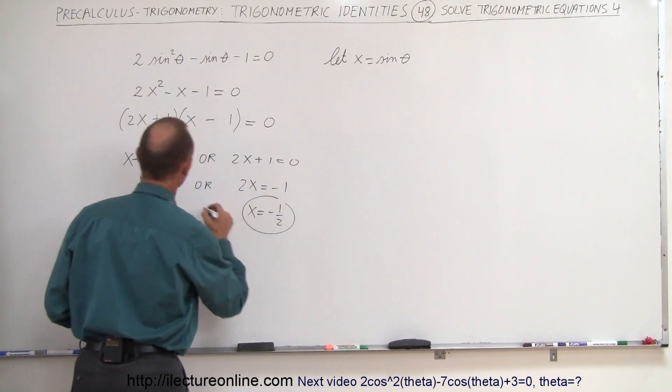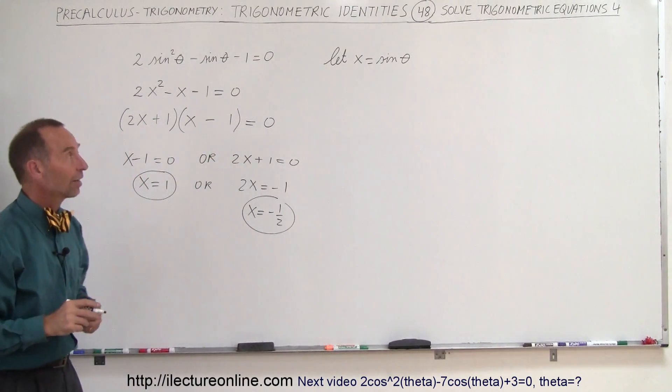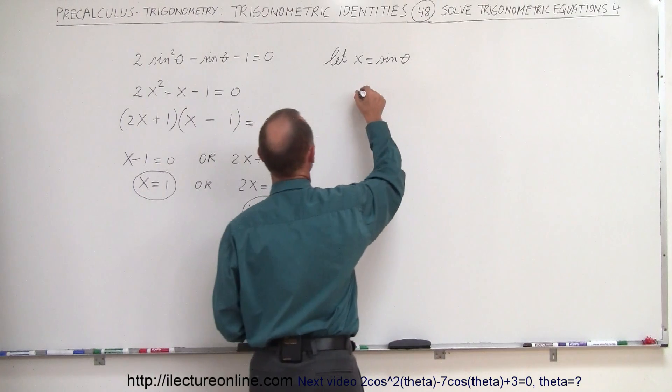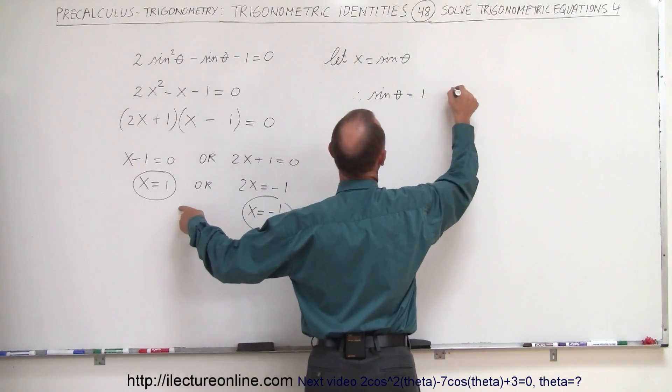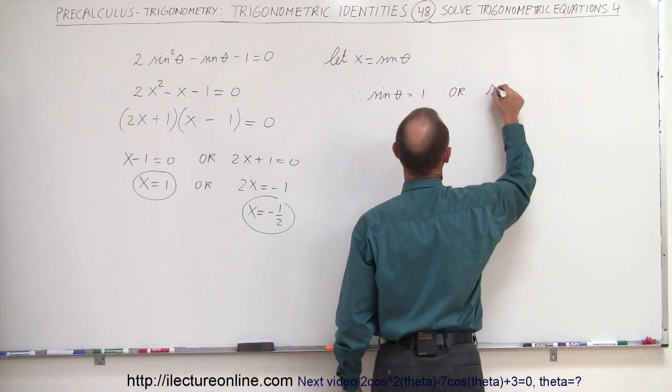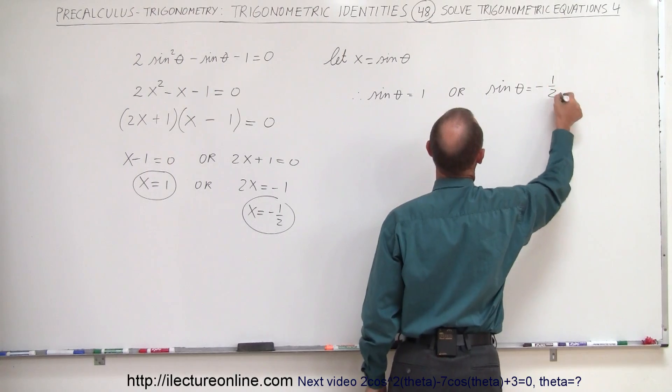So now that we have the two solutions for x, I'm going to substitute back for the sine of theta. So therefore I can conclude that either the sine of theta is equal to 1 or the sine of theta is equal to negative 1 half.